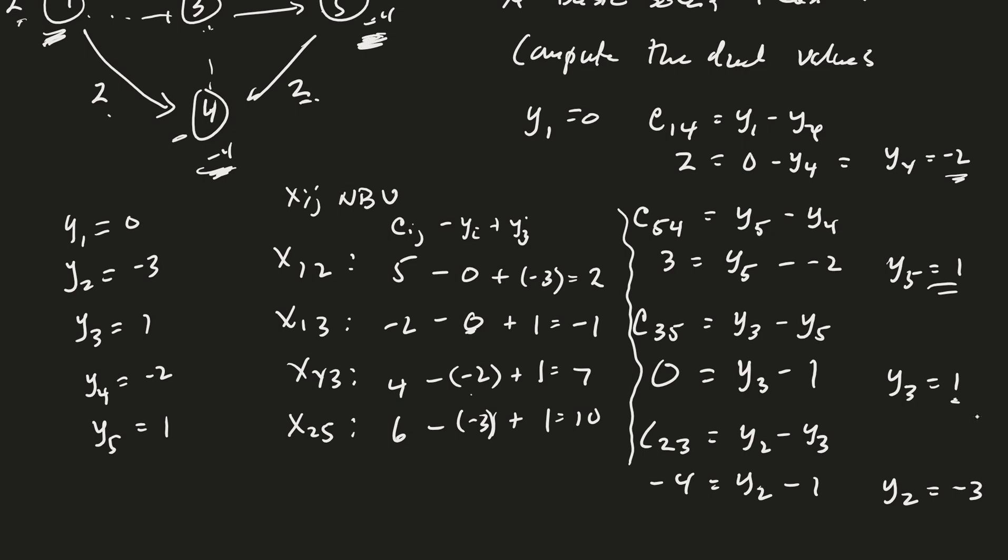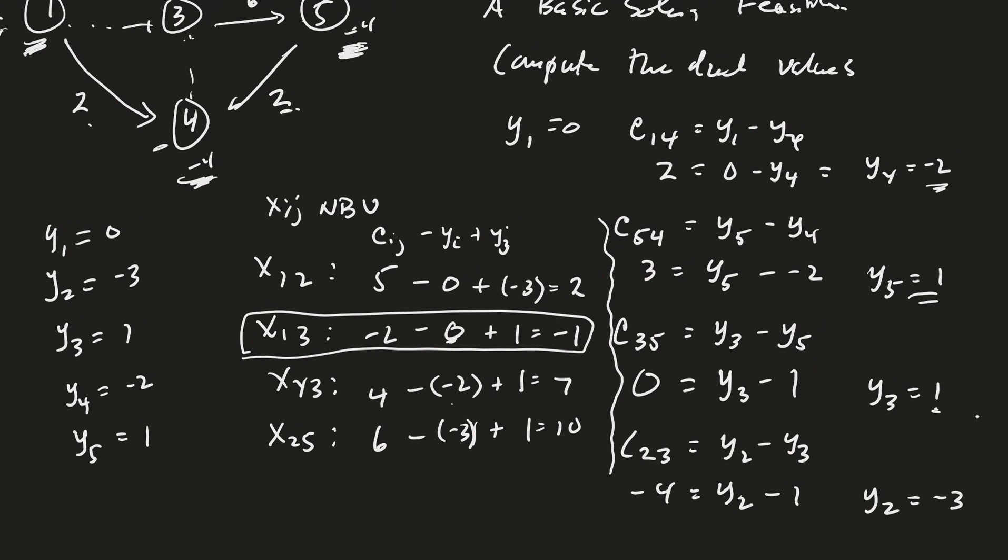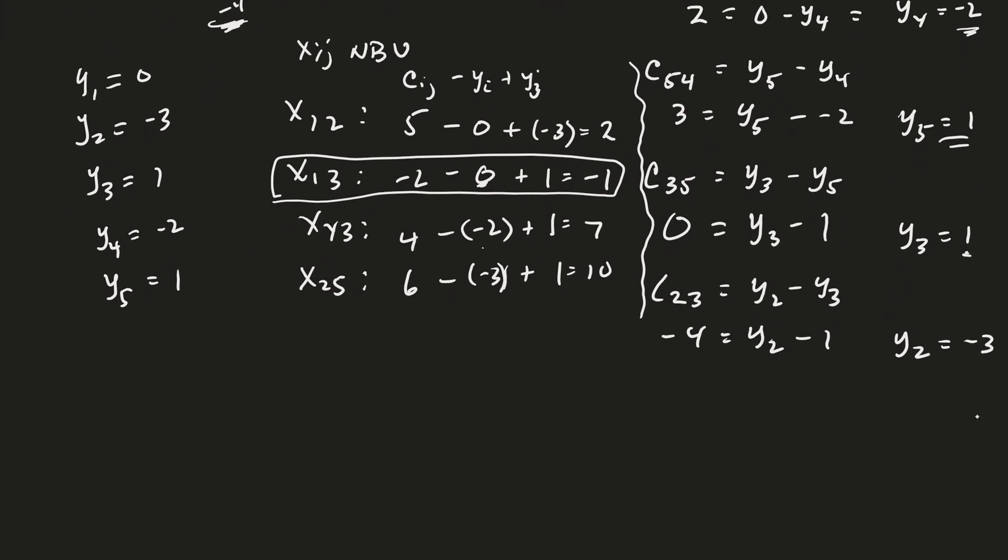Good. So the only problem edge here is the edge 1, 3. Okay. So I want to bring edge 1, 3 into the basic variable set.